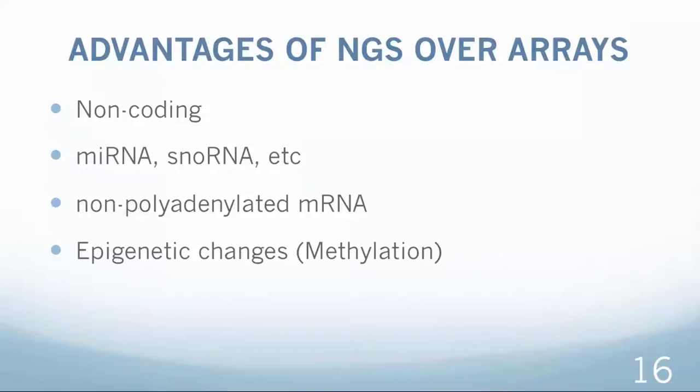Some advantages of NGS over microarray are not so evident at this time as manufacturers of microarrays are trying to keep up with the NGS capabilities. For example, Illumina microarray platforms have developed specific chips for non-coding RNA, microRNA, and other molecules which were excluded from analysis just several years ago. Nevertheless, the information obtained with NGS is much more abundant comparing with microarrays and includes the sequences of all small RNAs such as non-coding, small nucleolar RNA, non-polyadenylated messenger RNA that are not annotated at this time and can detect a number of epigenetic changes.